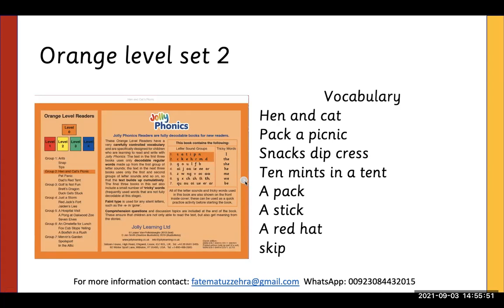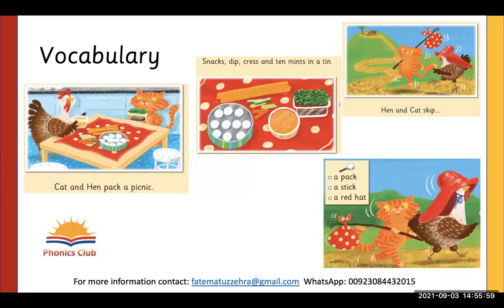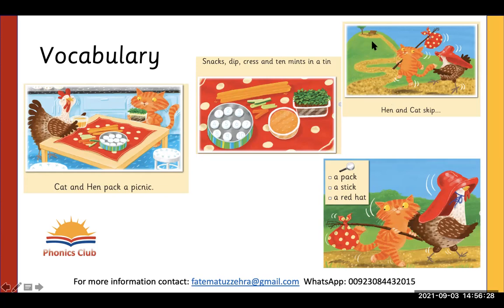Now let's have a look at the vocabulary of the story. Teachers can discuss the pictures with students and everything that is there. Teachers can ask students to count what is there — what is in the box, what is in the tin — and discuss what is happening in the picture, for example, it looks like they are going uphill somewhere.